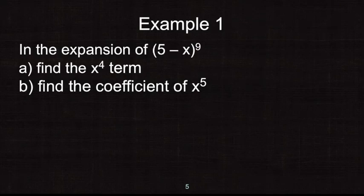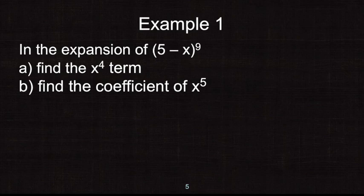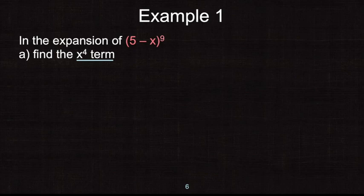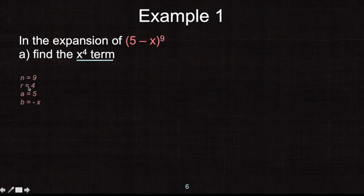Example 1: in the expansion of (5 minus x) to the power of 9, find (a) the x to the power of 4 term. A term consists of the numerical coefficient and the literal coefficient. Let's list the information: n equals 9 (the power), r equals 4 (because of x to the power of 4), a equals 5 (the first term), and b equals negative x (the second term).